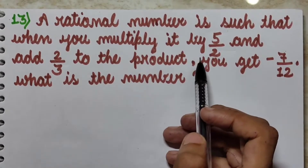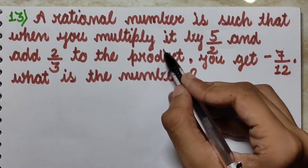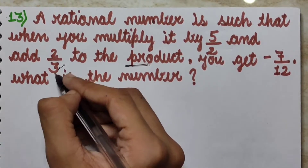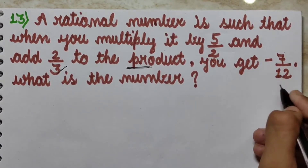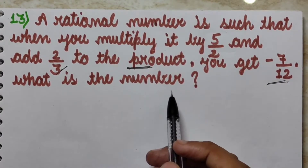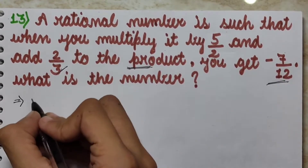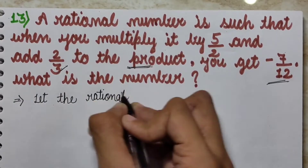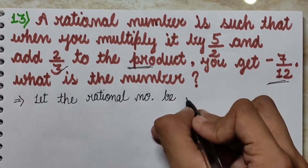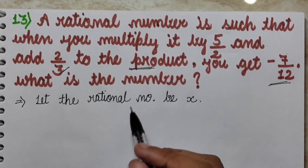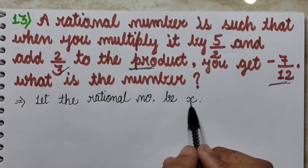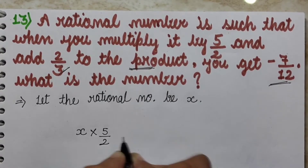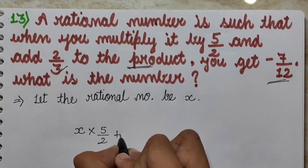So we have a rational number. We multiply it by 5 upon 2, then add 2 upon 3. Let the rational number be x. We will form the equation: x multiplied by 5 upon 2, then plus 2 upon 3.